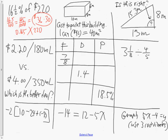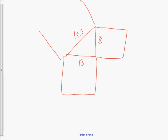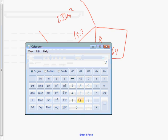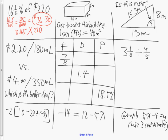Question three asks: is this a right triangle, with sides 15.3, 8, and 13? If it's a right triangle, Pythagoras will work. So 13 squared is 169, 8 squared is 64, and those added together give 233. The square root of 233 is 15.26, which rounds to 15.3 — so yes, it is a right triangle.